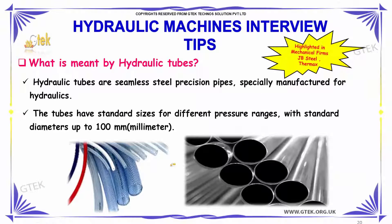What are hydraulic tubes? Hydraulic tubes are seamless steel precision pipes specially manufactured for hydraulics. They have standard sizes for different pressure ranges with standard diameters up to 100 mm.